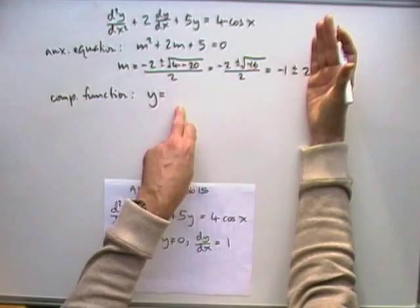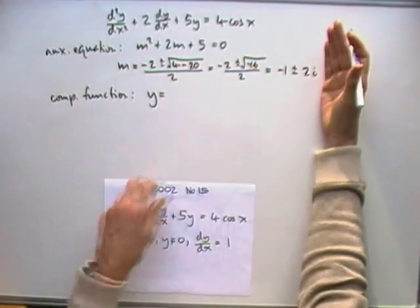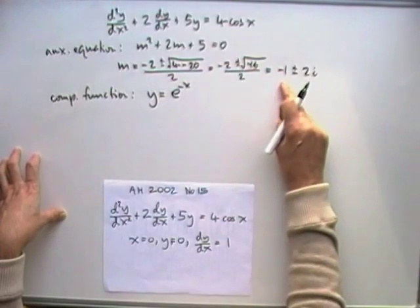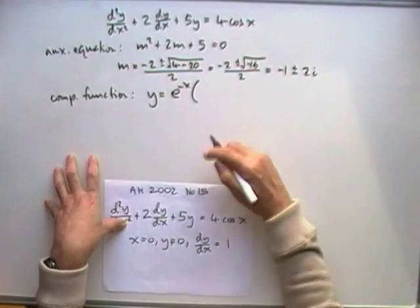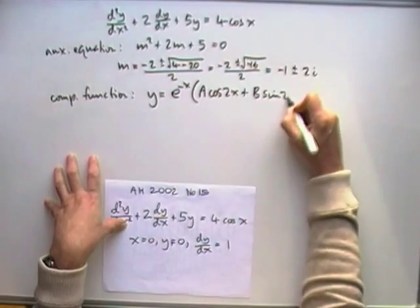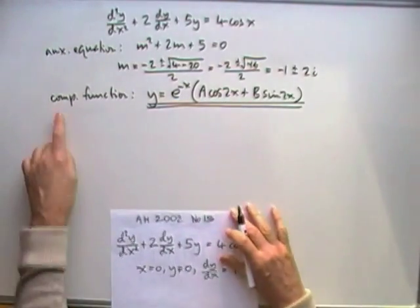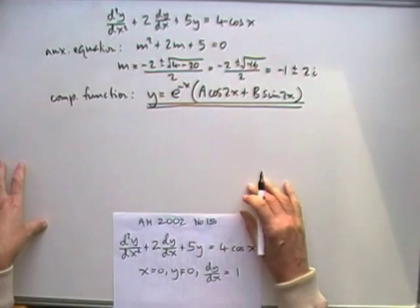I'm going to have sines and cosines in it then, so the real part of it then, that's the negative 1, I'm going to have for the x, e to the negative x, and the 2 at the end is going to form the multiple of the angle, so I've got A cos 2x, B sin 2x, yeah, and that's the complementary function, seems quick and easy just now, but it'll come back to haunt us at the end.